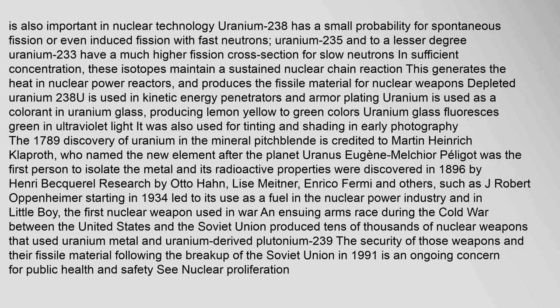Uranium glass fluoresces green in ultraviolet light. It was also used for tinting and shading in early photography. The 1789 discovery of uranium in the mineral pitchblende is credited to Martin Heinrich Klaproth, who named the new element after the planet Uranus. Its radioactive properties were discovered in 1896 by Henri Becquerel. Research by Otto Hahn, Lise Meitner, Enrico Fermi, J. Robert Oppenheimer and others starting in 1934 led to its use as fuel in the nuclear power industry and in Little Boy, the first nuclear weapon used in war. An ensuing arms race during the Cold War produced tens of thousands of nuclear weapons using uranium metal and uranium-derived plutonium-239. The security of those weapons following the breakup of the Soviet Union in 1991 is an ongoing concern for public health and safety.